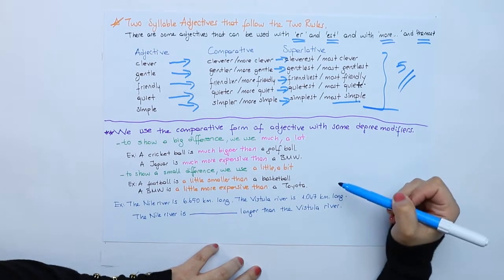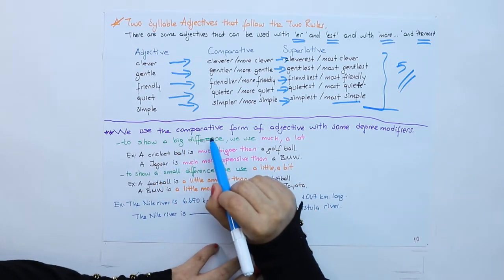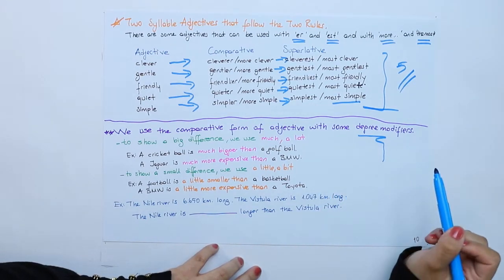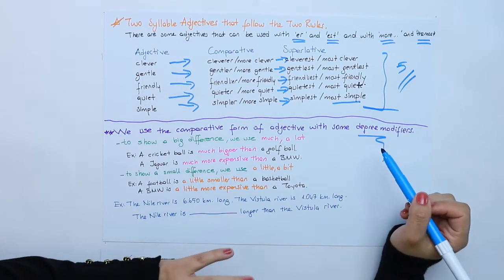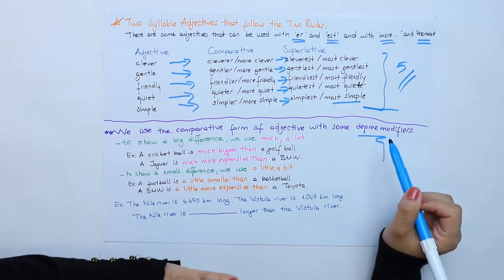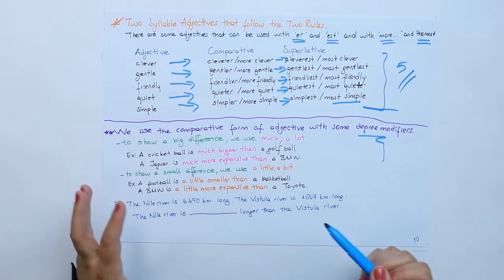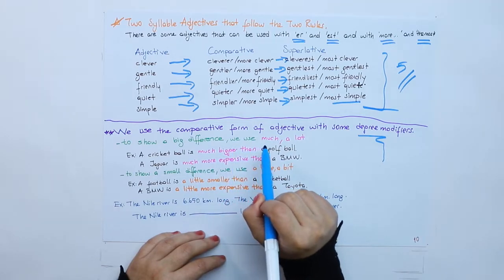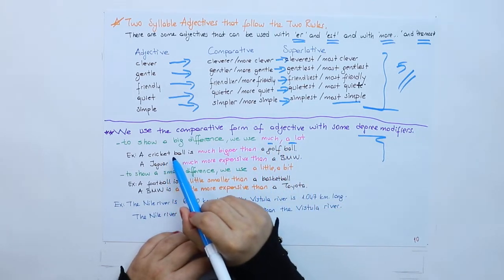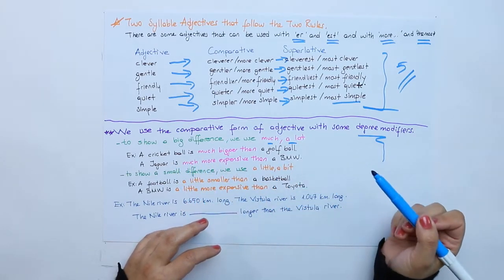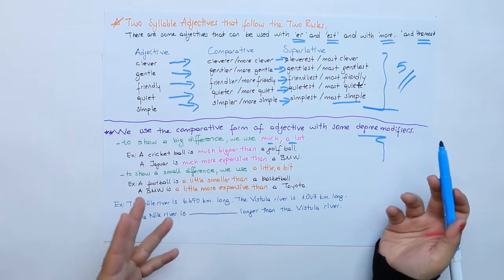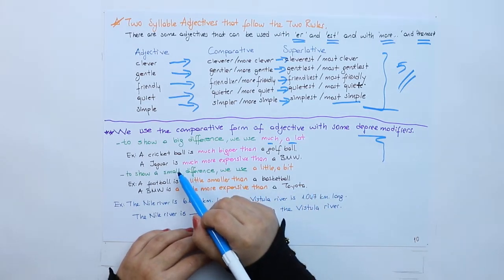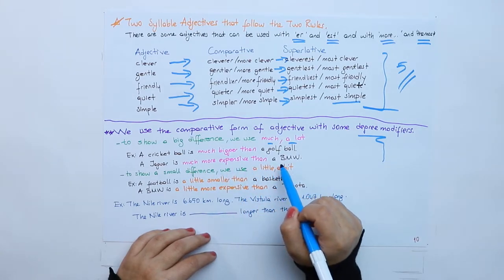We use a comparative form of the adjective with some degree modifiers. We use degree modifiers to put some emphasis on our adjective and the comparison. In the comparative forms, to show a big difference we use MUCH and A LOT. A cricket ball is much bigger than a golf ball.